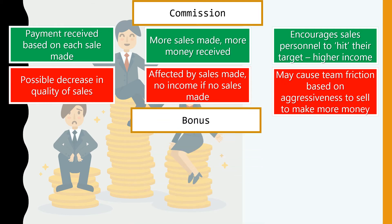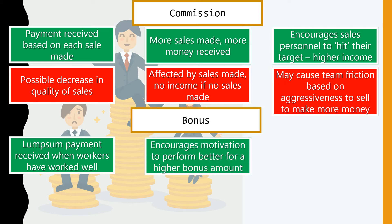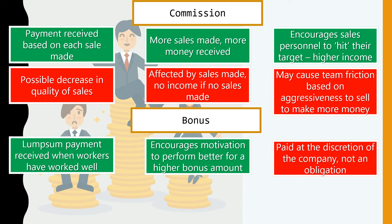Next is the bonus. A bonus is a lump sum payment received when workers have performed well. Companies give payouts to employees at their discretion — when workers in general are doing well, or when the company meets its sales targets and profits. This encourages motivation because employees who perform better may receive a higher bonus amount.